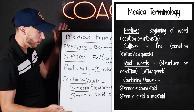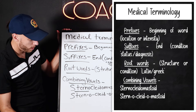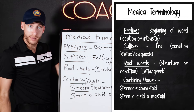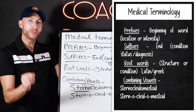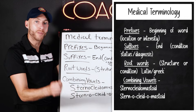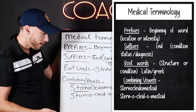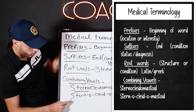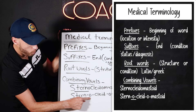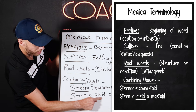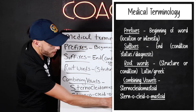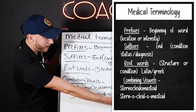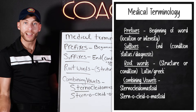I have an example here. Now let's break down this word. If I look at the word like this, it's pretty intimidating. If I use the combining vowel strategy — you know what vowels are — look at the O's here. So here's where we break it down: Stern-O-Cleid-O-Mastoid. And there it is. That's how you do it.